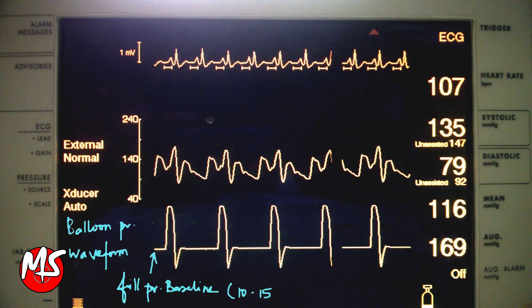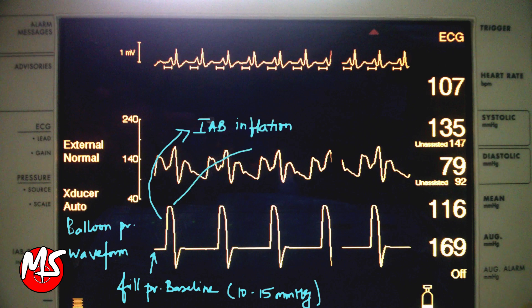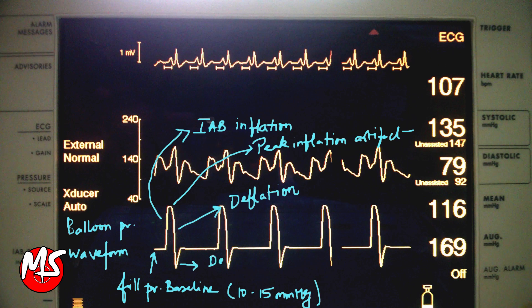The six phases are: balloon baseline pressure, IAB inflation, peak inflation artifact, IAB deflation, deflation artifact, and a plateau phase between the peak inflation artifact and the deflation phase.